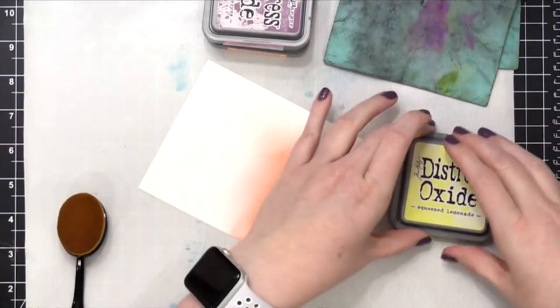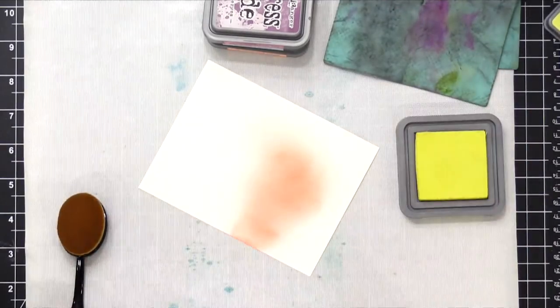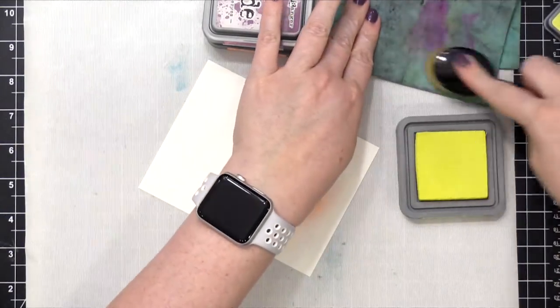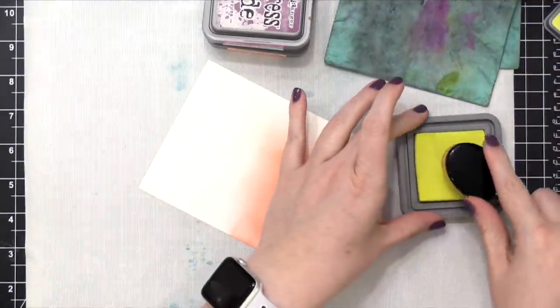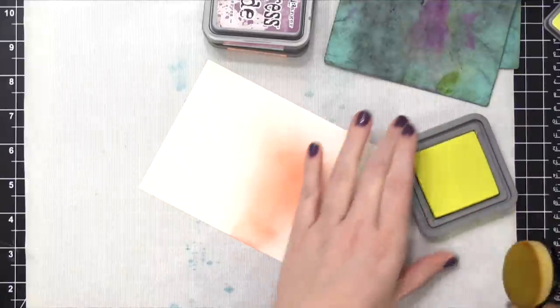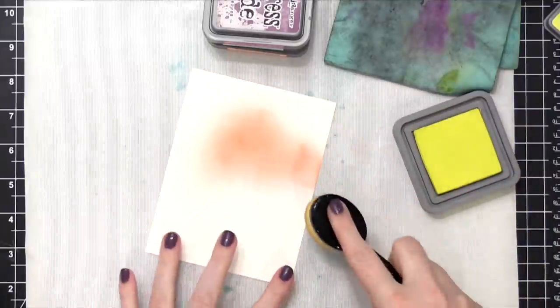So I'm gonna switch colors here and go to Squeeze Lemonade. I did a little research online, and people were saying one of the ways you can clean the brushes is just by wiping it on a stamp chamois or on a wet towel, so it'll just wipe away some of that ink color.